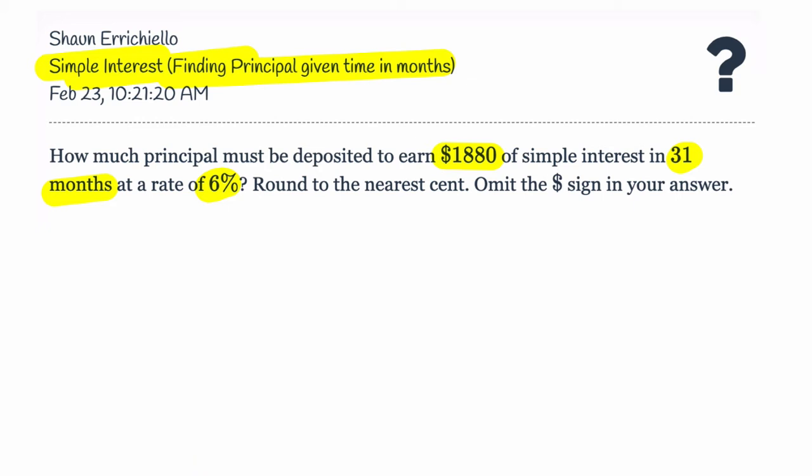All right, well, with simple interest, let's pull up our formula that we use in these problems, which says interest equals principal times the rate of interest times the time. So the amount of interest equals the principal value, the starting value of the account, times the rate of the interest and multiply by the time.